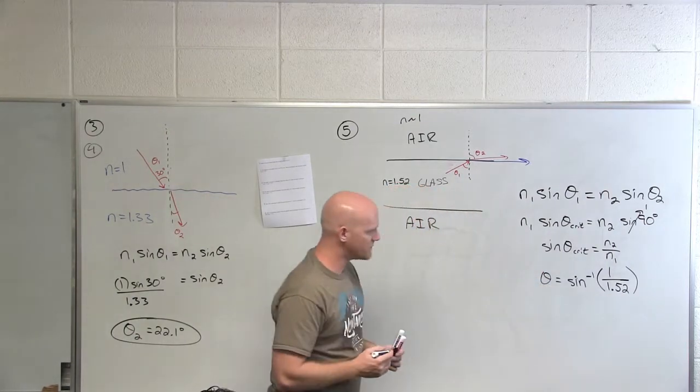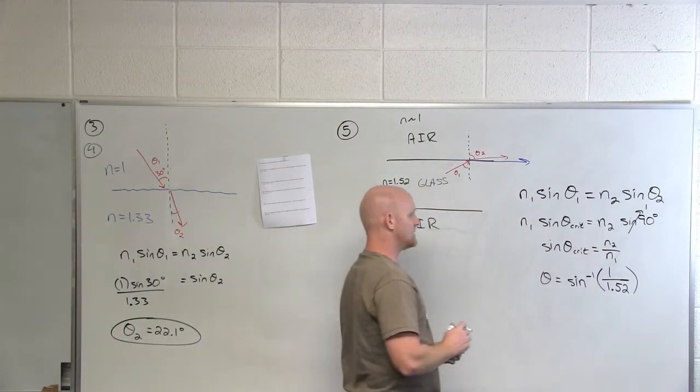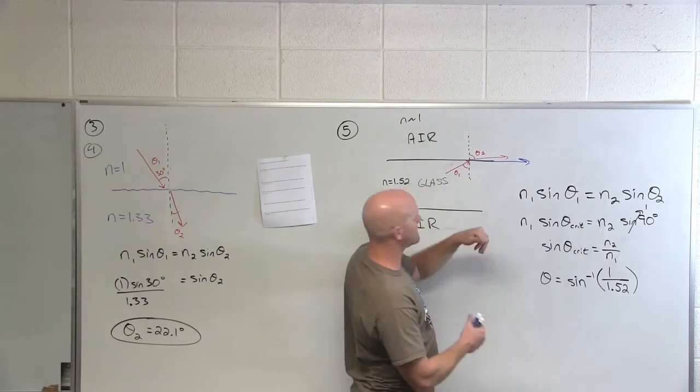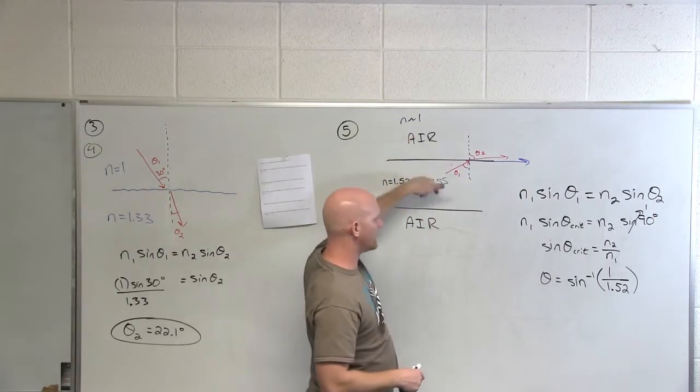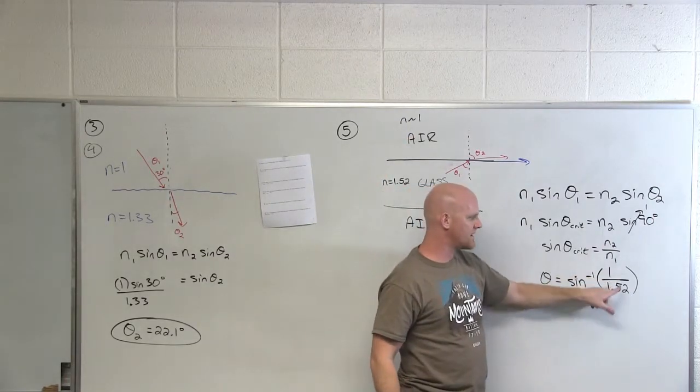So we'll take the inverse sine of 1 over 1.52. If you notice, if we did this backwards and wanted to know if there was a critical angle going from air to glass, we'd end up with 1.52 over 1.